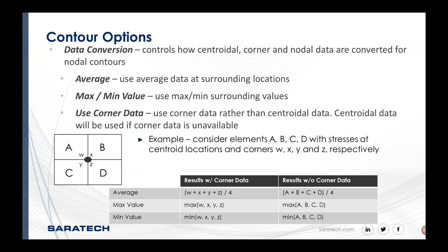One area where I get a decent amount of questions is data conversion. It controls how centroid, corner, and nodal data are converted for nodal contours. You have options with corner data or without corner data, and you can grab average values, max values, and minimum values. This graph is a great visualization of what's going on. It's a question that gets asked a lot, so I added it to the slides.